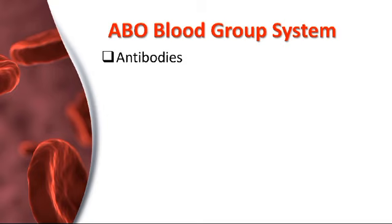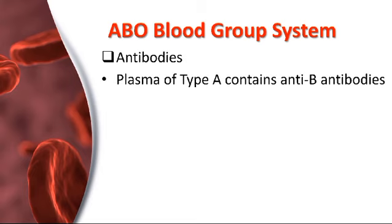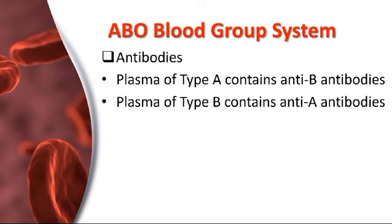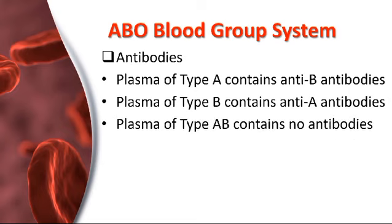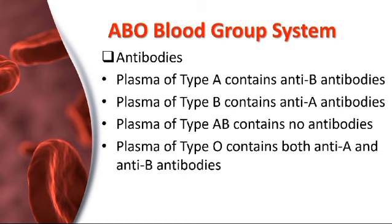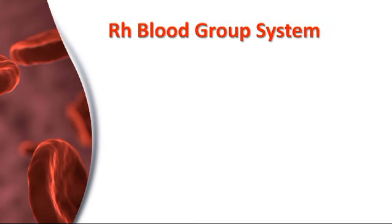The plasma or serum of an individual contains antibodies against the antigens in red blood cells. The plasma of type A blood contains anti-B antibodies. The plasma of type B blood contains anti-A antibodies. No antibodies related to the ABO system are present in type AB blood, and both anti-A and anti-B antibodies are present in type O blood.